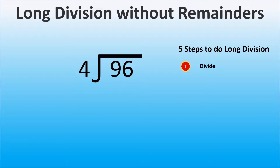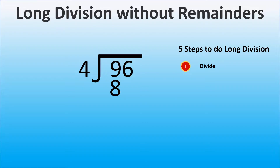Thus, here we will start with 9. Now we choose the closest number to 9 that can be divided by the divisor, 4 in our example. 8 is the closest number to 9 that we can divide by 4, so we write 8 under 9. 8 divided by 4 is 2, so we write 2 above the long division sign on top of 9.